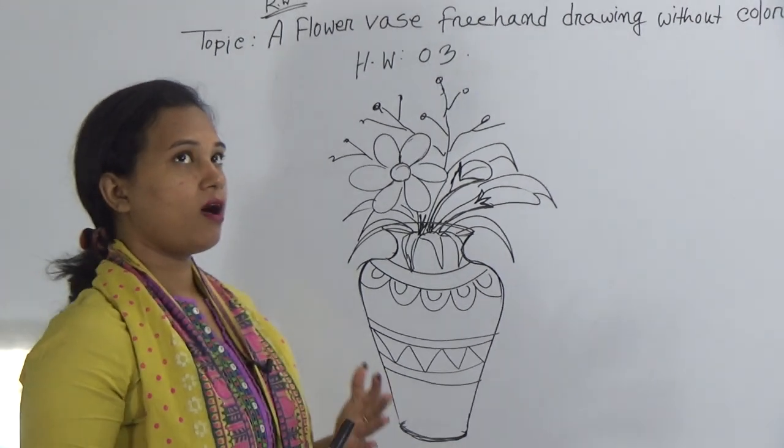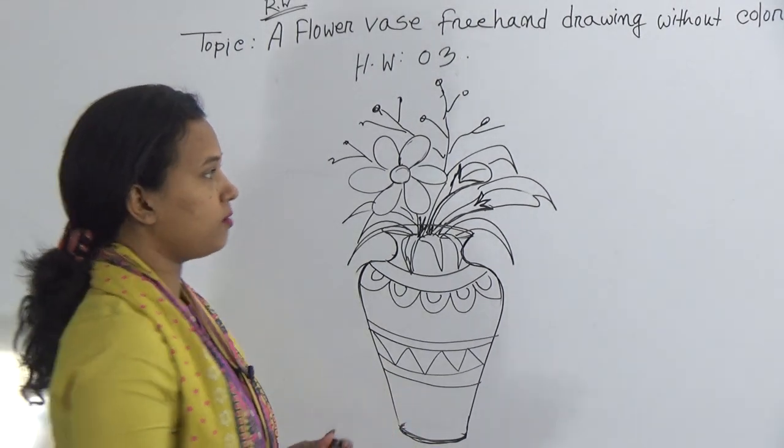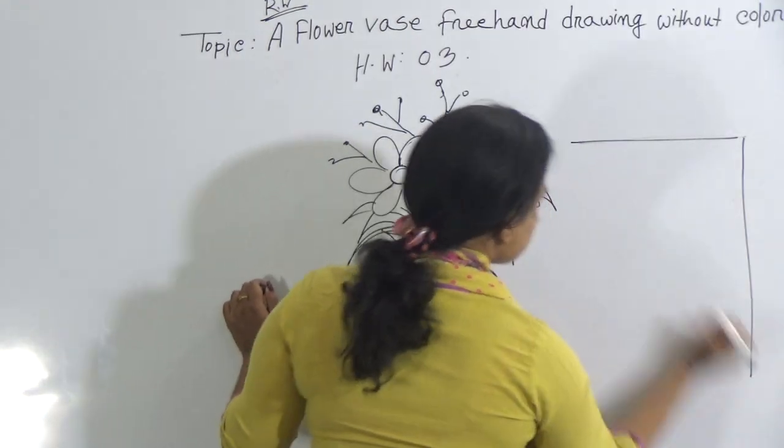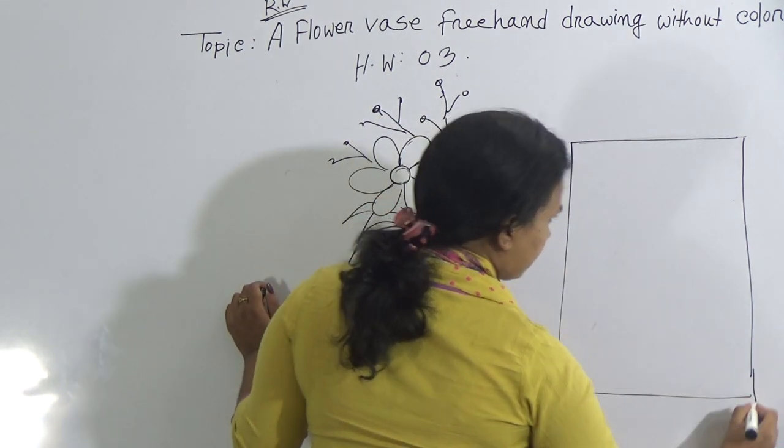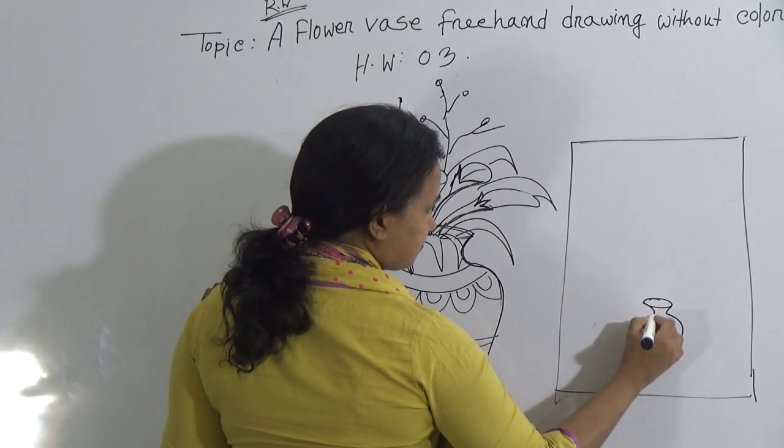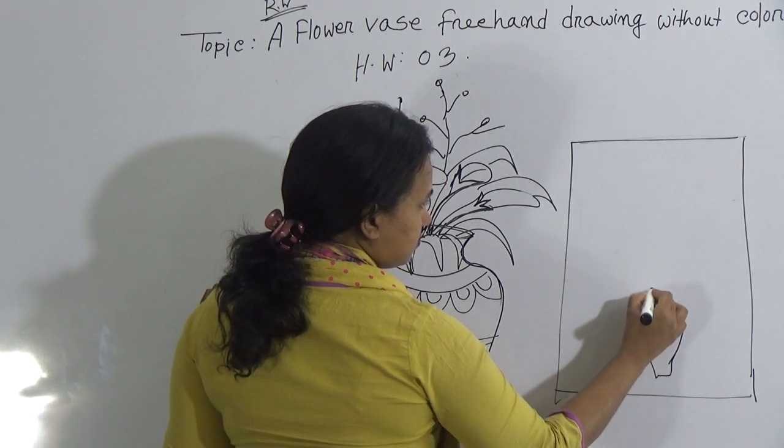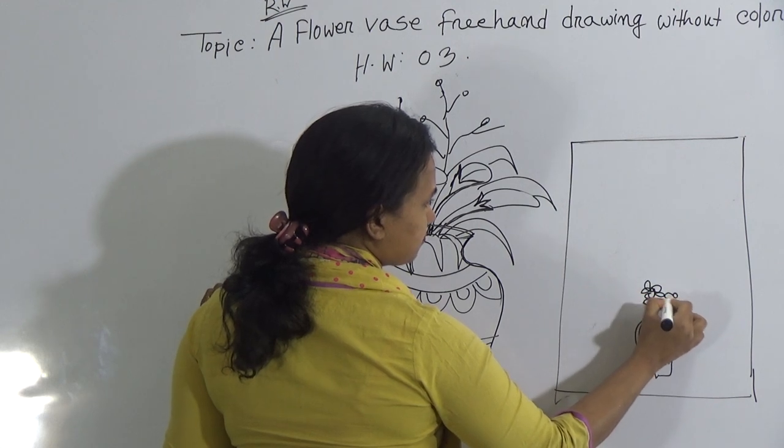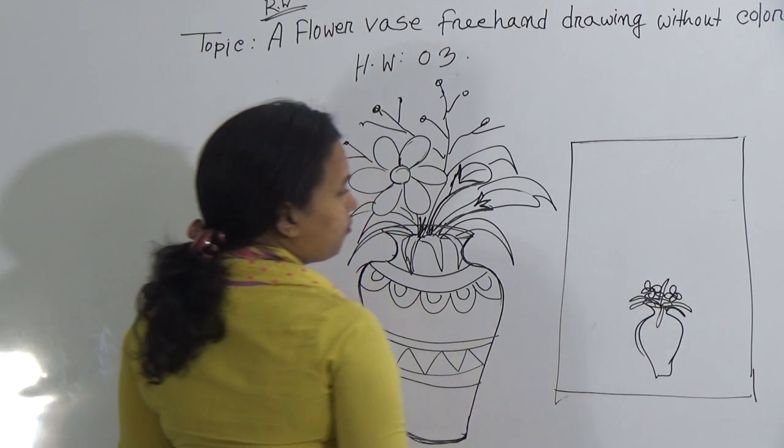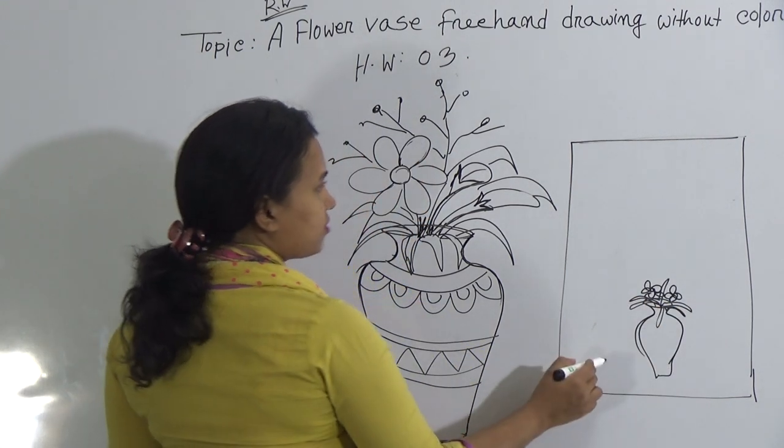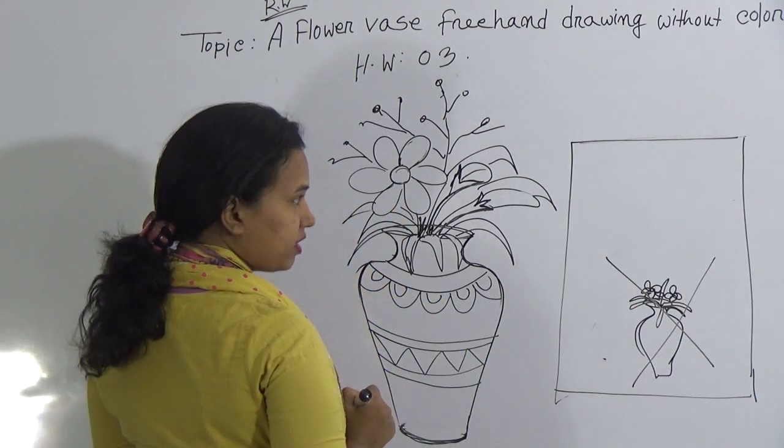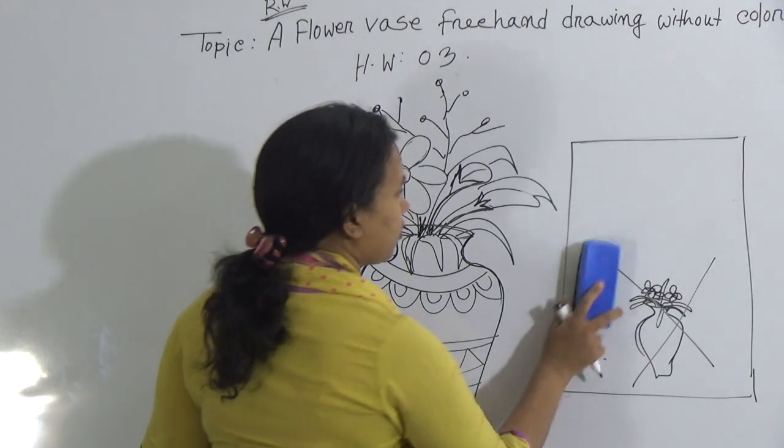And remember some important things: when you draw on your copy, suppose this one is your copy, and draw a tiny flower vase like this and draw tiny flower also. When you draw this type of flower vase on a big page, I will not accept it. You must use your copies.